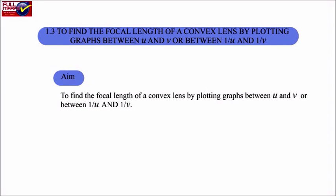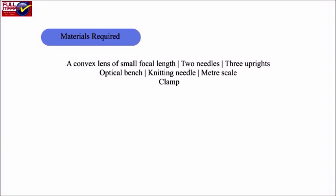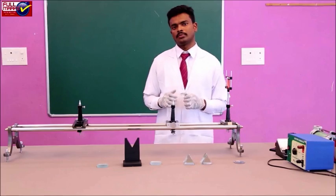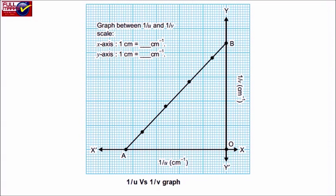Experiment 1.3B: To find the focal length of a convex lens by plotting graphs between U and V, or between 1/U and 1/V. Materials required: a convex lens of small focal length, 2 needles, 3 uprights, optical bench, knitting needle, meter scale, and clamp. The lens formula gives the relationship between object distance u, image distance v, and focal length f. A graph between 1/U and 1/V is a straight line and the intercepts of the graph give the value of 1/f.